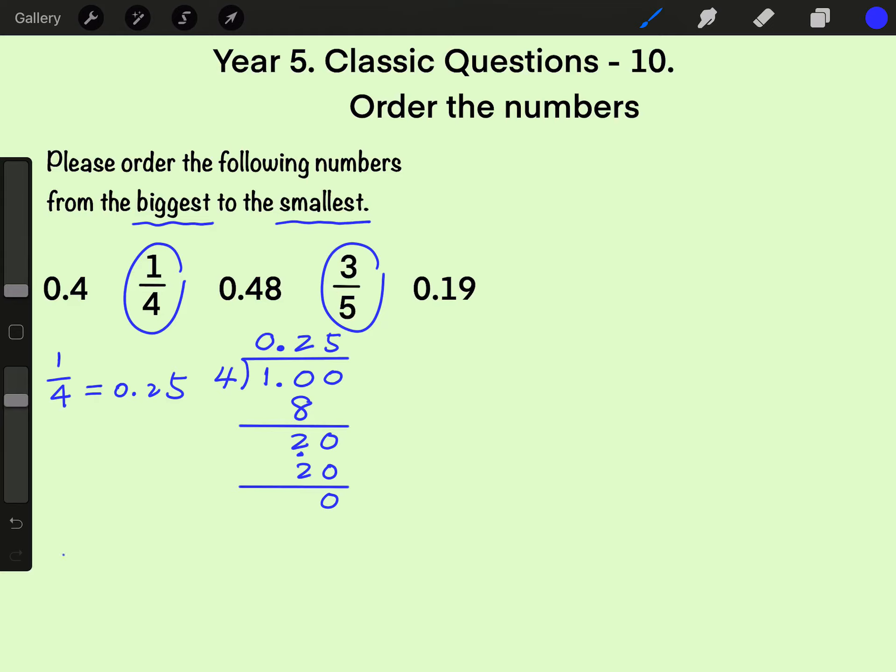Next one, three fifths equals to 0.6. 3 over 5 equals to 3 divided by 5. Again, because 3 is smaller than 5, we need a decimal point and a 0 on the tenth position. Now, 3 on the one digit position equals to 30 on the tenth position.